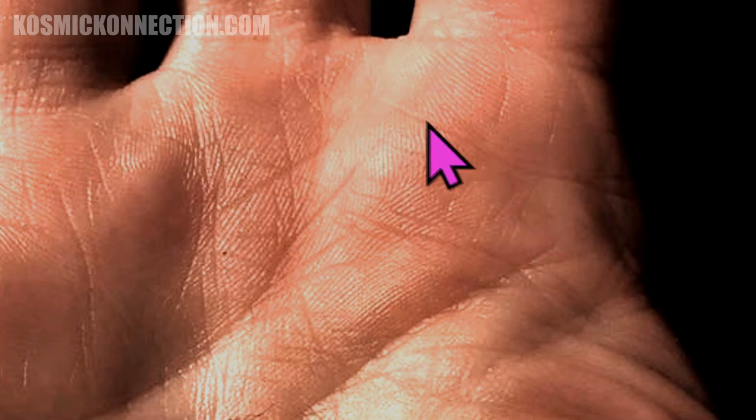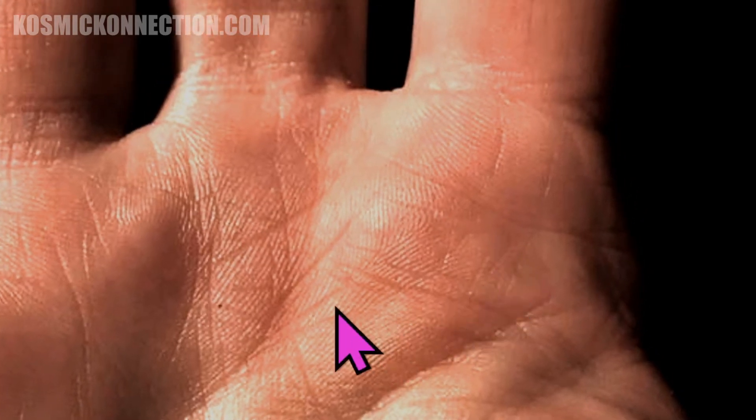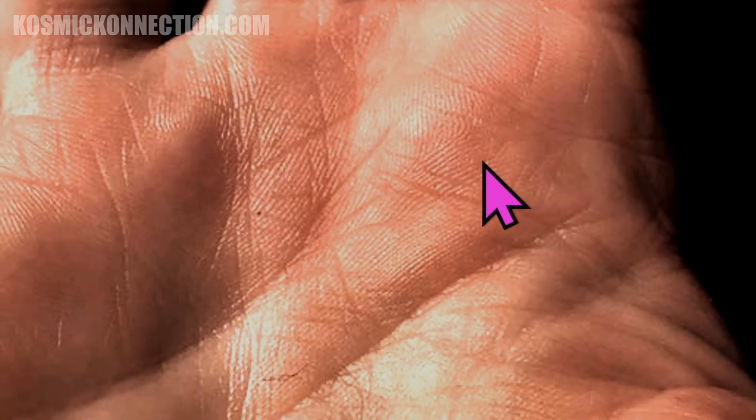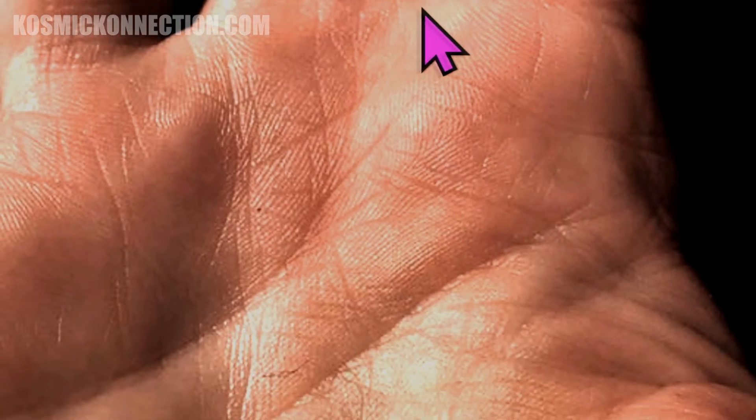Okay, down in the sixth sense you should have a nice little pad. You do, as far as I can see - it looks like you got a pretty good little pad underneath that Jupiter finger. It's called a mount, and that's your sixth sense or your intuition.